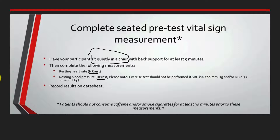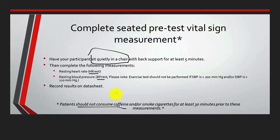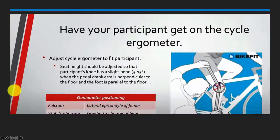We record all information on a data sheet. We would also tell subjects not to consume coffee or smoke for 30 minutes prior to this test, because these things will alter metabolism, blood pressure, and heart rate. When we begin to set up the bike, we have to be critical about a couple of things with the setup.